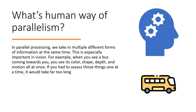Let's take a simple human example to understand parallelism better. Consider vision: you are seeing a bus. What are the things you will see in parallel? You will see the color, the shape, depth, and motion all at once. You are going to see color, shape, depth, and many other features of the bus simultaneously.